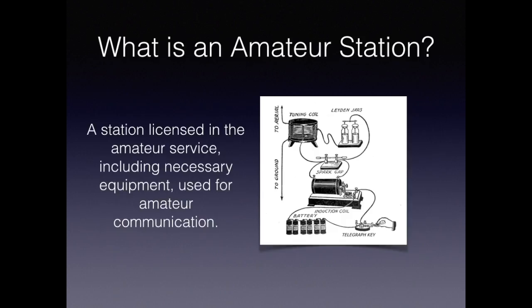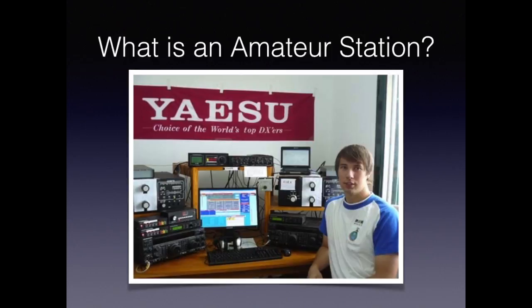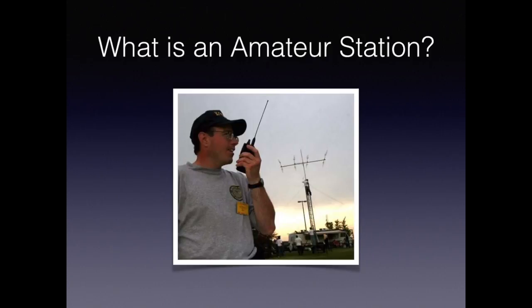An amateur station is just the equipment used to make contact. It's usually a transmitter and a receiver with some type of input device such as a key or a microphone. Modern stations include computers, transceivers, and other ancillary equipment such as amplifiers to enhance your contact ability. But it can be as simple as a handheld device. In the background you can see someone up on a tower, which is necessary for the more worldly contacts.